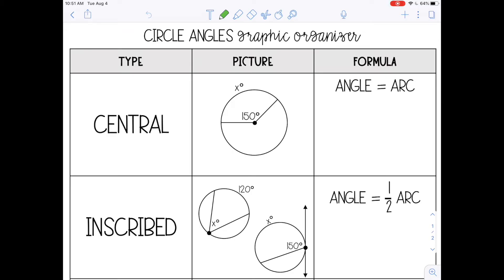The first type of angle in a circle is a central angle, and a central angle has a vertex that is the center of the circle.